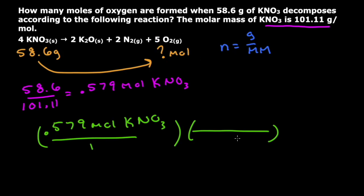And so I'm going to put the KNO₃ on the bottom right here. And then I'll put the O₂ right here up top. And that's because I want this KNO₃ here to cancel this KNO₃ there.